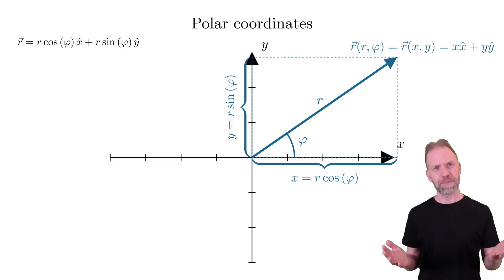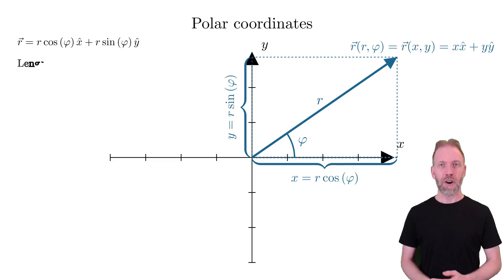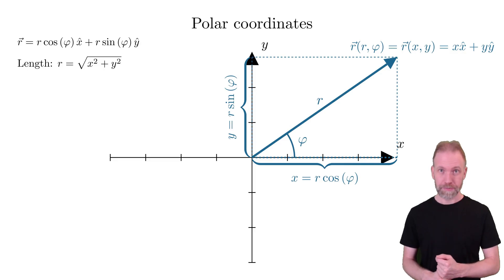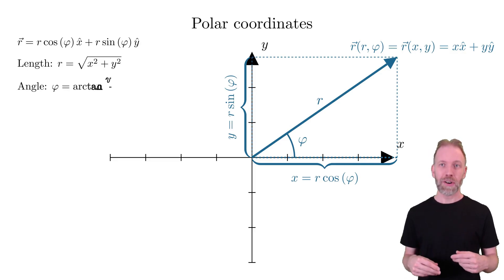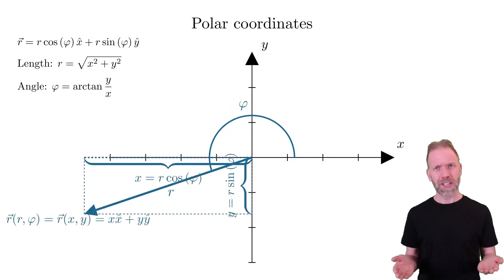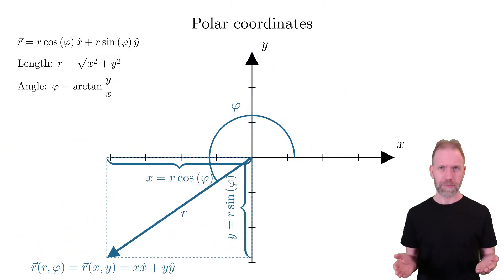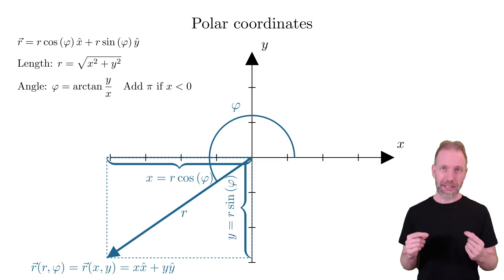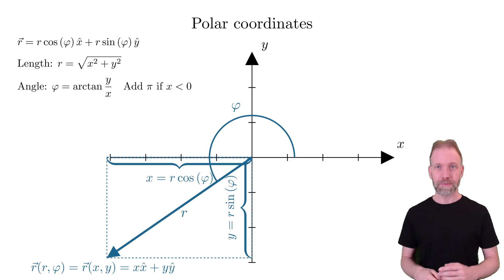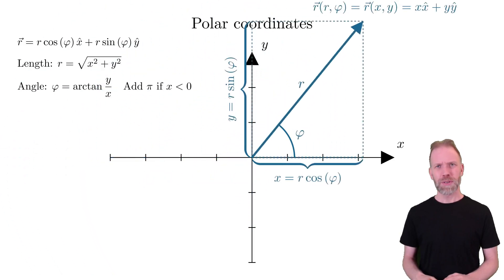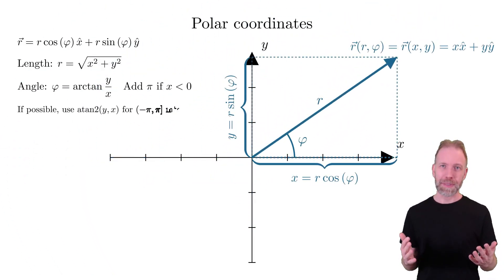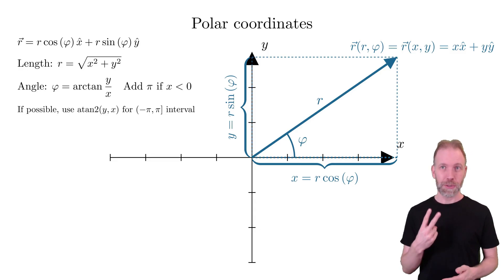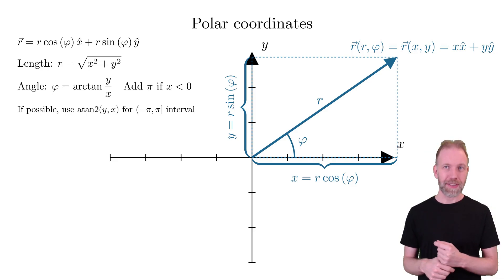But how do we calculate r and phi? We can calculate r from the Pythagorean theorem. The angle phi is given by arc tan of y over x. But if we add 180 degrees to the angle, y over x will have the same value. We can add the additional condition that we add 180 degrees — which in radians is pi — if the x coordinate is negative. To avoid this complication, many systems have implemented the function atan2 with two arguments, which can handle the entire interval. I recommend using it when calculating phi.